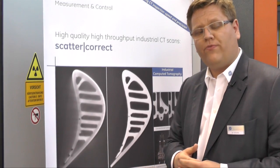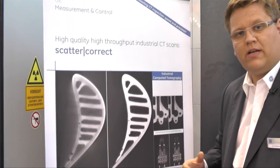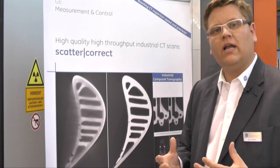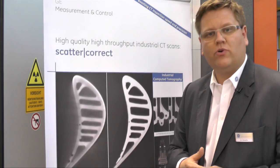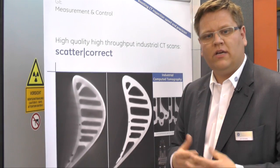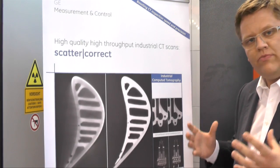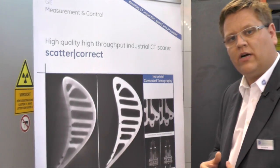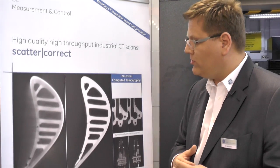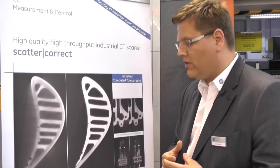In the past, you were forced to take a line detector instead of a flat panel detector in order to get a sharp result. However, using a line detector takes much more time compared to a flat panel detector. Therefore, GE is in 2015 introducing ScatterCorrect, a hardware module which is used together with a certain software module in order to reduce the scatter radiation for a cone beam CT.